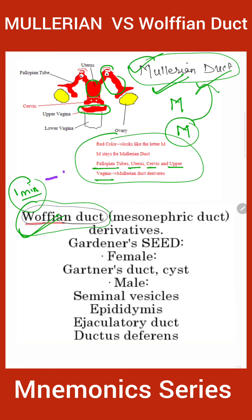Now, Wolffian duct — basically 'wolf' means bhediya (wolf), bhediya means man, insaan bhediya hota hai. So Wolffian duct is the duct of man.